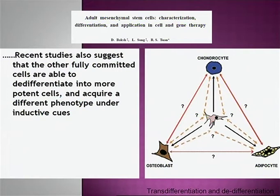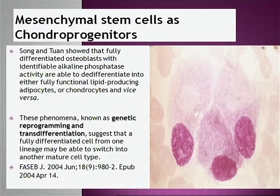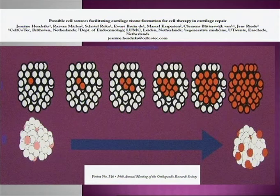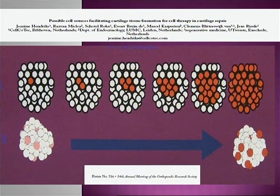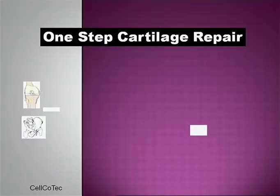A recent study suggested that fully committed cells are able to de-differentiate into more potent cells and acquire different phenotypes under inductive cues. A chondrocyte can turn into an osteoblast or adipocyte and vice versa. Song and Chua have shown the same for osteoblasts, calling this genetic reprogramming or transdifferentiation. If you take a few chondrocytes and mix them with a large number of MSCs, cross-talking between the chondrocyte and the MSCs causes the MSCs to turn into chondrocyte-like cells by transdifferentiation.